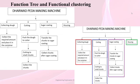Function tree and function clustering. The Darwad Peda making machine has 4 different functions: collecting dough, cutting, sugar coating, and housing.